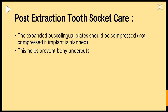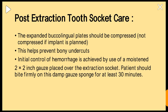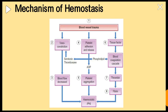The expanded buccal and lingual plates should be compressed — but not compressed if an implant is planned. Compressing the extraction socket helps prevent bony undercuts. Initial control of hemorrhage is achieved using a moist gauze piece placed over the extraction socket; the patient should bite firmly on the damp gauze sponge for at least 30 minutes.